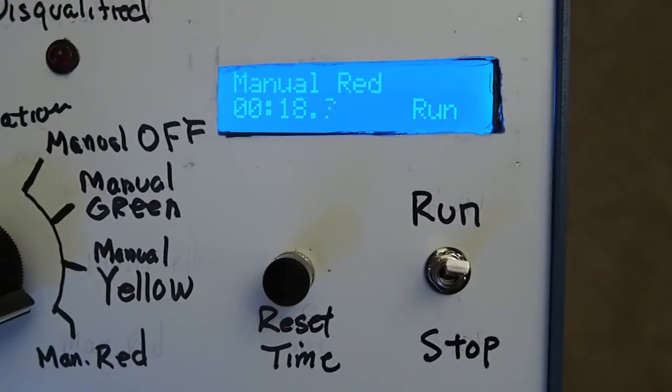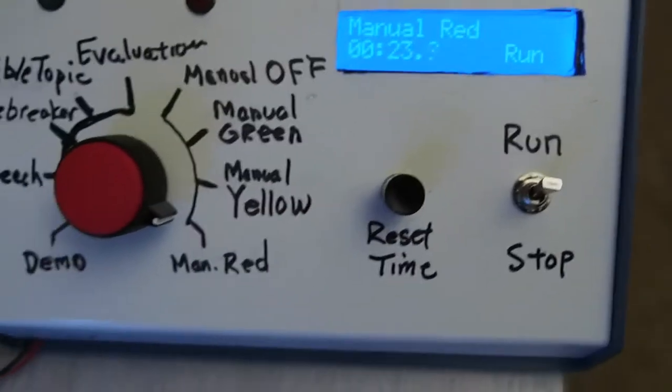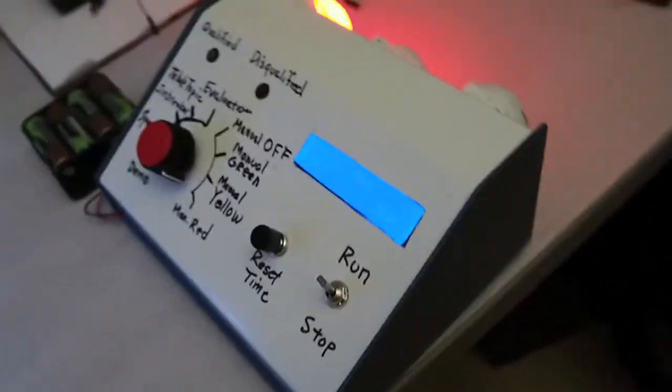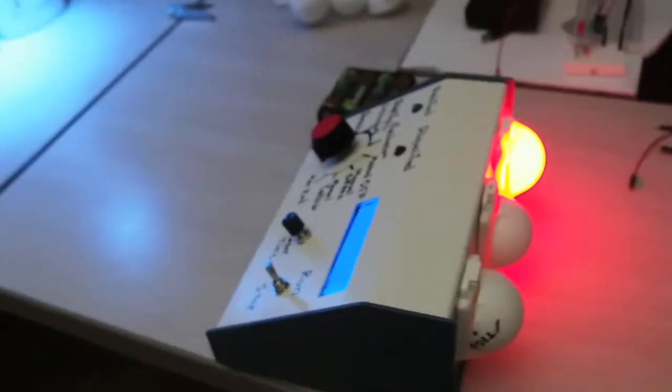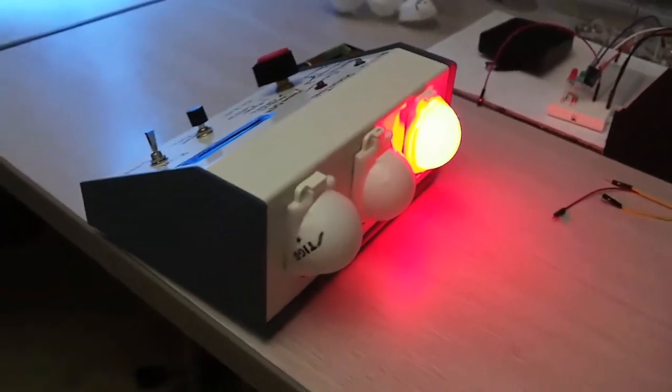And make a programmable toggle switch I guess of some sort and figure out some way to do that. Anyways, here is my Arduino-based Toastmaster timing light. Ta-da!